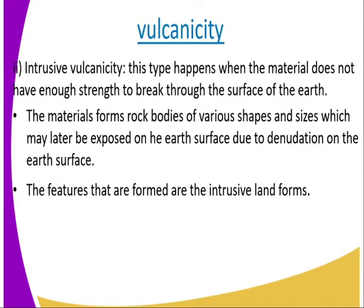The second type is intrusive volcanicity. This happens when the materials do not have enough strength to break through the surface of the earth. They don't have the ability to reach the earth's surface, so they start cooling near the mantle or before reaching the surface. The materials form rock bodies of various shapes and sizes, which may later be exposed on the earth's surface due to denudation. The features formed here are referred to as intrusive landforms.